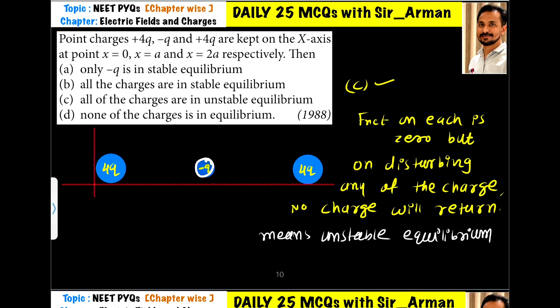But how do we decide if it is stable or not? Whenever the system is in stable equilibrium, the system will try to move towards the stable equilibrium. If the charge is in stable equilibrium and I try to displace this charge towards left, then what will happen? The charge should come back to this position.